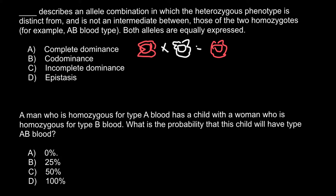With co-dominance, if we cross the same flower with red pigment with another flower with absence of any pigment, the result would be different. All the progeny would have patches of white color and patches of red color — some spots that are pure red and some spots that are pure white.